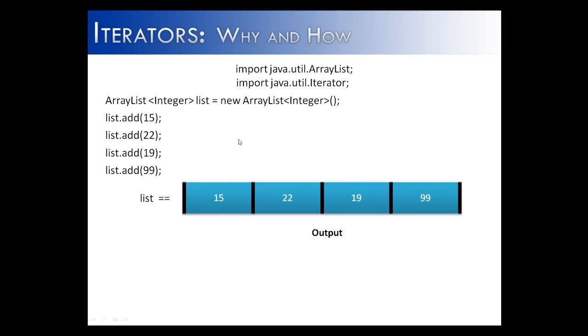The first thing that you need to do when using an iterator is to import the iterator from the util package. What I've done here is I've created an ArrayList. I've added four different items. And now what I've done is I've created an iterator.